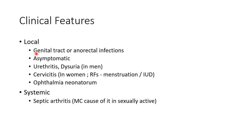Locally it causes genital tract or anorectal infections. The patients can be asymptomatic. It causes urethritis and dysuria in men — urethritis is inflammation of the urethra and dysuria is pain during urination. It causes cervicitis, or inflammation of the cervix, in women. The risk factors for development of cervicitis are menstruation and use of intrauterine contraceptive devices. Neisseria gonorrhea also causes ophthalmia neonatorum, or neonatal conjunctivitis, in neonates born to mothers with Neisseria gonorrhea infection.